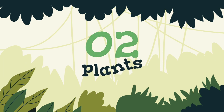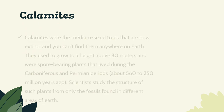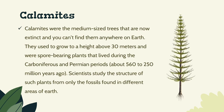Number 2: Plants. Calamites. Calamites were medium-sized trees that are now extinct, and you can't find them anywhere on Earth. They used to grow to a height above 30 meters and were spore-bearing plants that lived during the Carboniferous and Permian periods, about 360 to 250 million years ago. Scientists study the structure of such plants from only the fossils found in different areas of Earth.